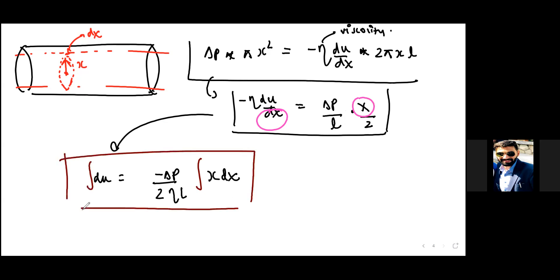This is indefinite integration, not definite integration. Let's finalize the value of this integral. This integral solves to be u equals minus delta p by 2ηL, x squared by 2, plus c. C is there because it is indefinite integral—the constant of integration will be there.